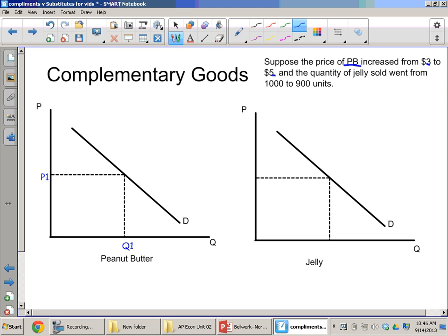Let's draw that on the graph. So we have price one is three dollars, and that's going to go up to price two of five dollars. And we know that, for that reason, the quantity sold is going to decrease.